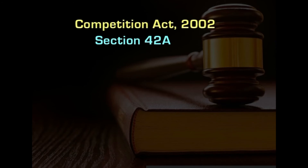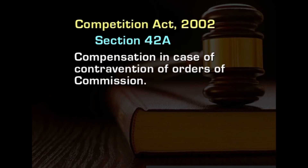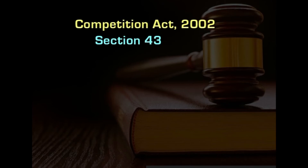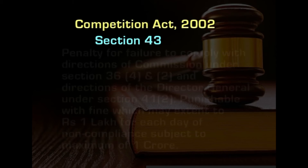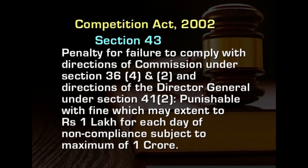We will move on to section 42A, which deals with compensation in case of contravention of orders of the commission. Whenever there is a contravention of an order passed by the commission, an aggrieved person can file an application for recovery of compensation for the loss suffered due to non-compliance with the orders or directions of the commission passed under sections 27, 28, 31, 32, 33, and 43. A penalty is laid down here for failure to comply with the directions of the commission under section 36, subsections 4 and 2.